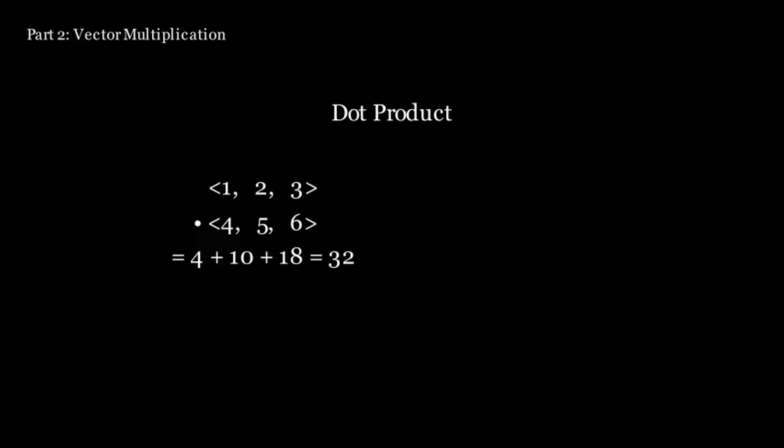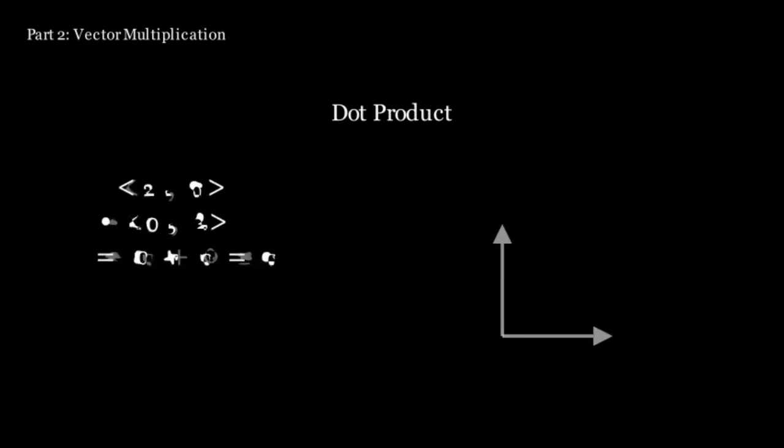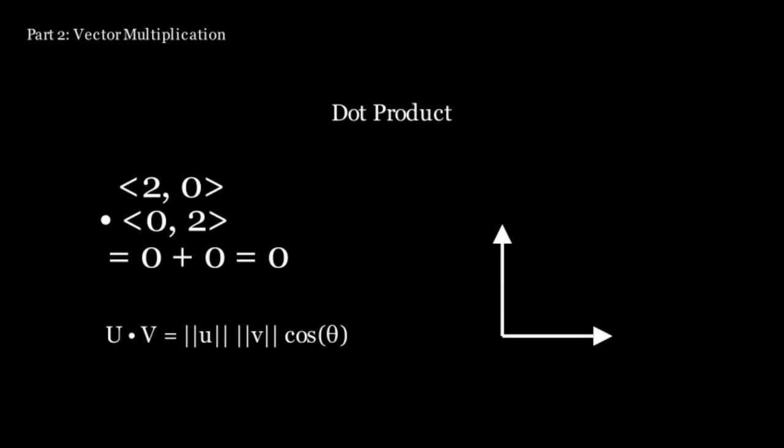This may seem arbitrary, but there exists an interesting connection between dot products and the spatial relationship between two vectors. Two perpendicular, or orthogonal as they're called in 3D space vectors, will always have a dot product of zero. For two parallel vectors, the dot product is equal to the product of the magnitude of the two vectors. This property extends to become the following formula, where theta is the angle between the vectors u and v, and the double absolute values mean magnitude of.